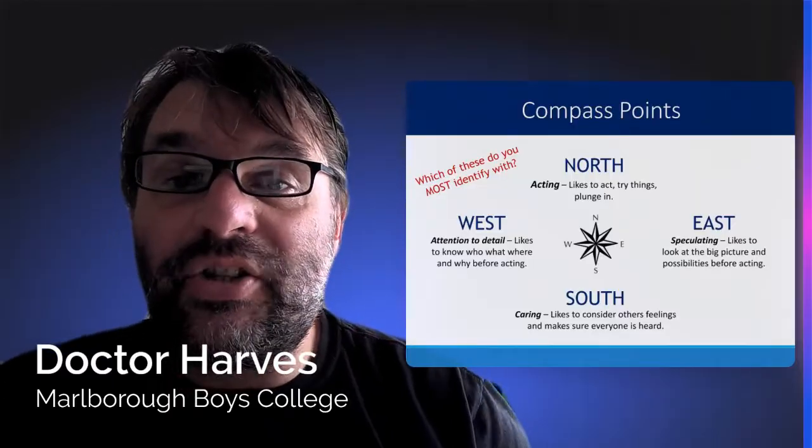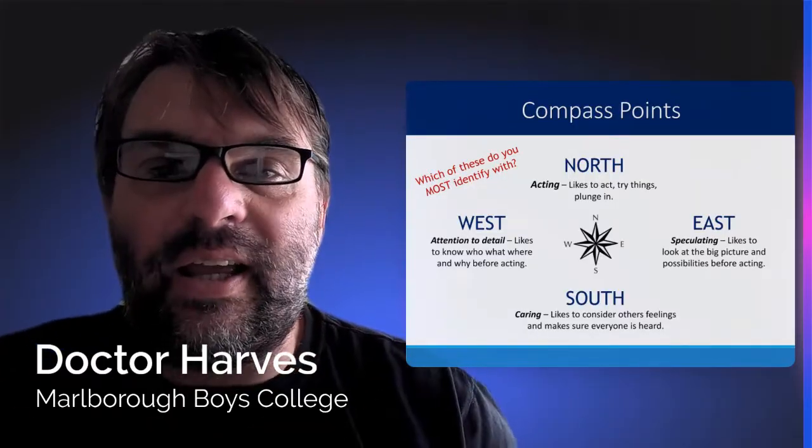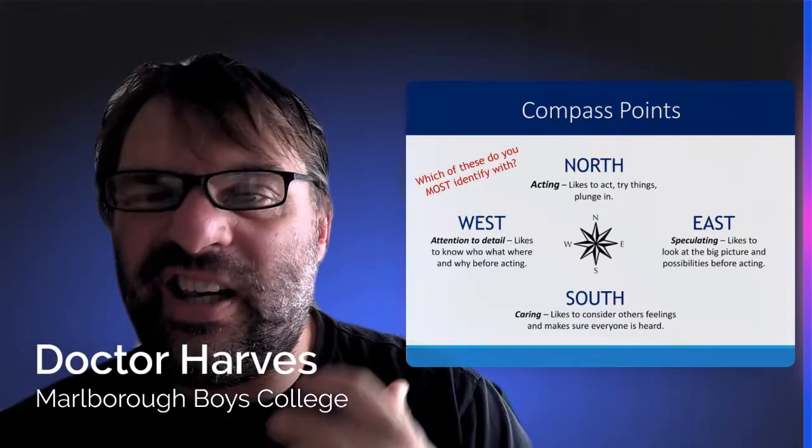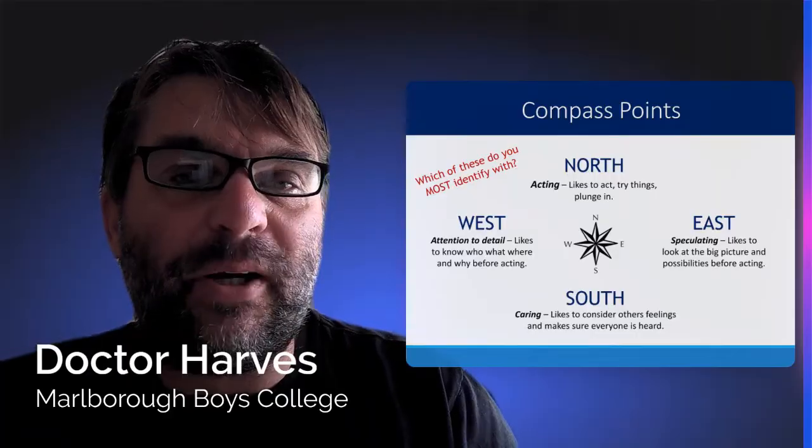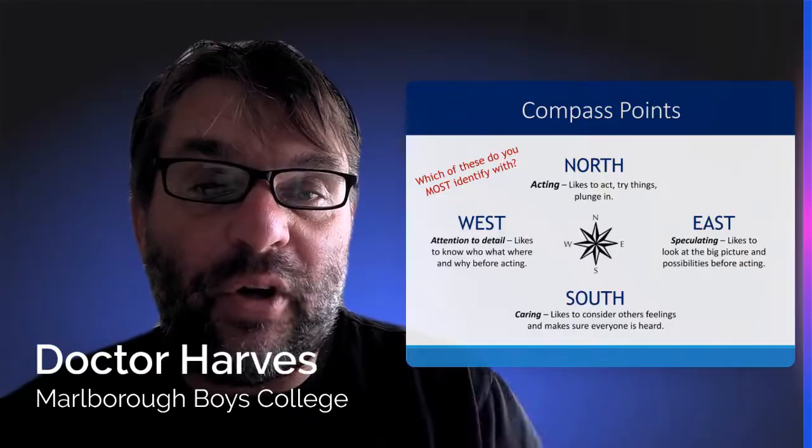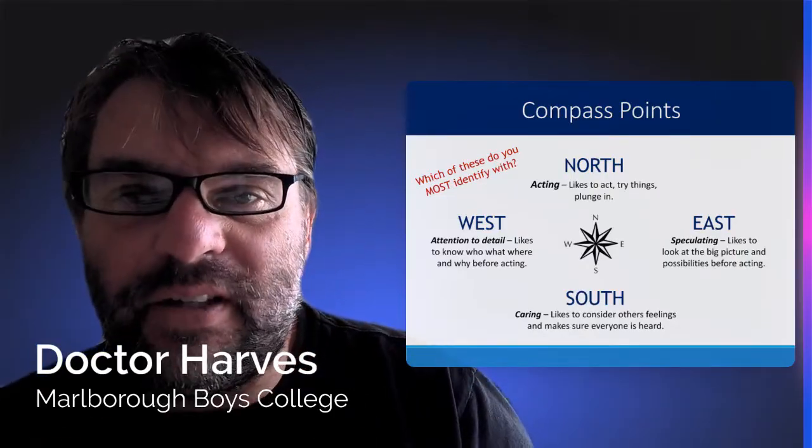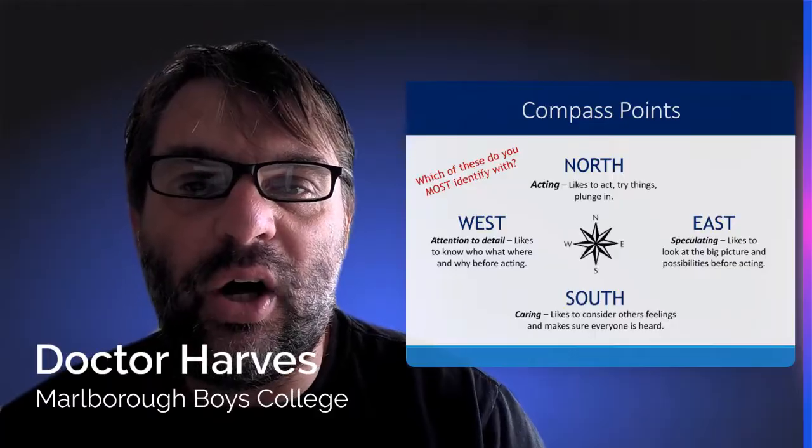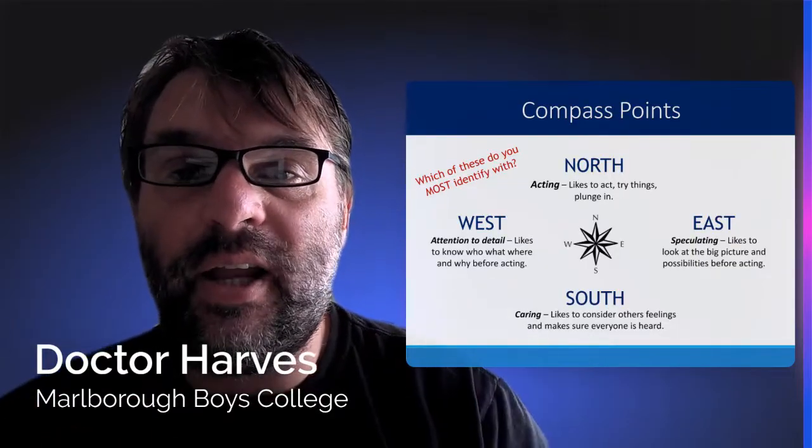In our class, there's going to be a large group of people. That's why we want you all to work together. Some of us like to act and try things, plunge right in. Some of us are speculators—they like to look at the big picture and the possibilities before moving in and acting. There's those who like to care for each other and make sure everybody's heard in the class. And there's those who have attention for detail, who like to know who, what, and why before acting. So pause the video now and think about which one you most identify with.